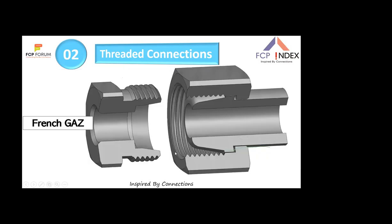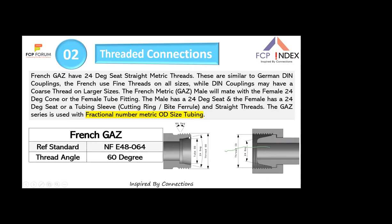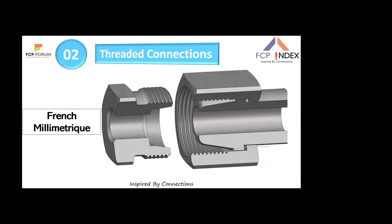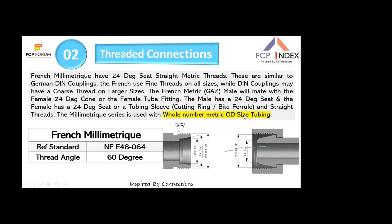French Gas series also has a 24-degree connection with 60-degree thread angle. The distinguishing feature is that it uses fractional-number metric OD series tubes — for example, 12.7, 15.9, 19.05 mm. French Millimetric is similar to the Gas series but uses whole-number metric tube ODs such as 12, 15, 18, 22 mm. The absence of fractional tube sizes is the key difference between the Gas series and Millimetric.